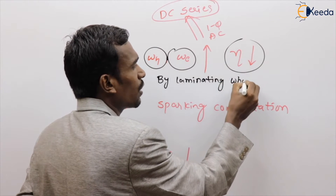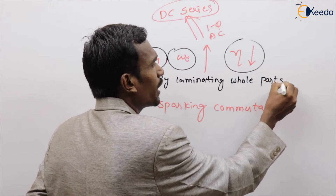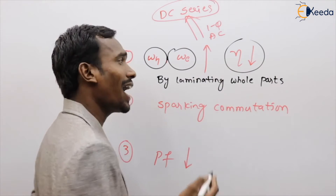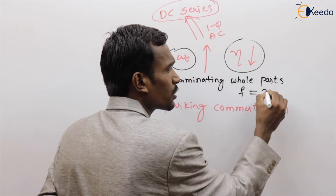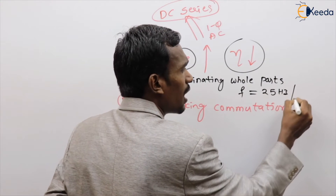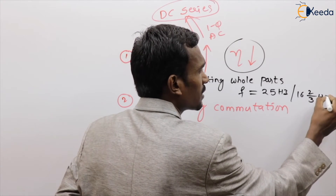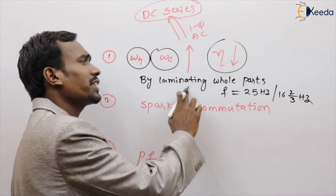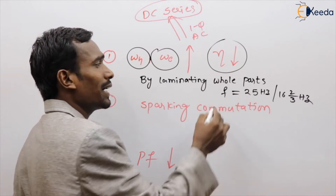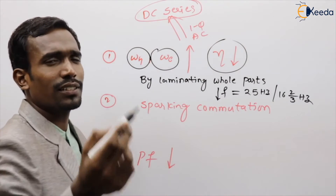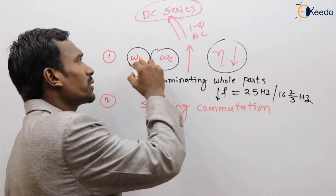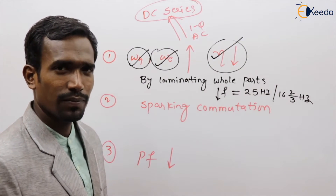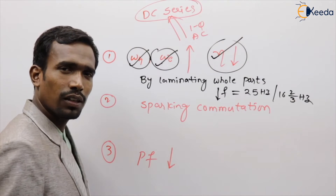The first remedy: by laminating the whole parts of the machine, we can reduce hysteresis and eddy current losses and improve efficiency. Also, frequency should be reduced to 25 Hz or 16⅔ Hz. By laminating whole parts and reducing frequency, we can reduce losses and increase efficiency.